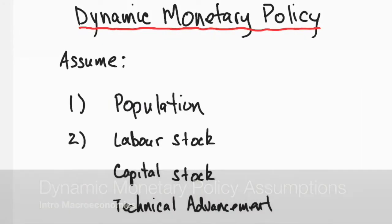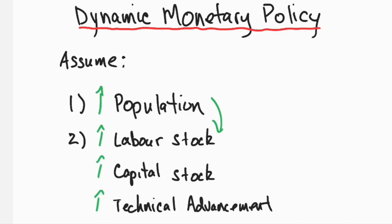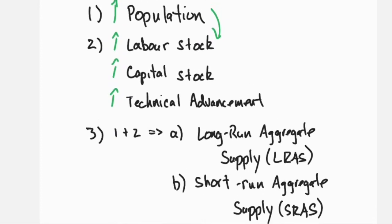Dynamic analysis seeks to provide a realistic model of the cause and effect of change. The primary difference from a basic model is that yearly the population grows — implying the labor force grows — the capital stock grows, and technological advancement occurs. Together, these imply that long-run aggregate supply grows, or the potential GDP of the economy grows, and that the short-run aggregate supply also grows.